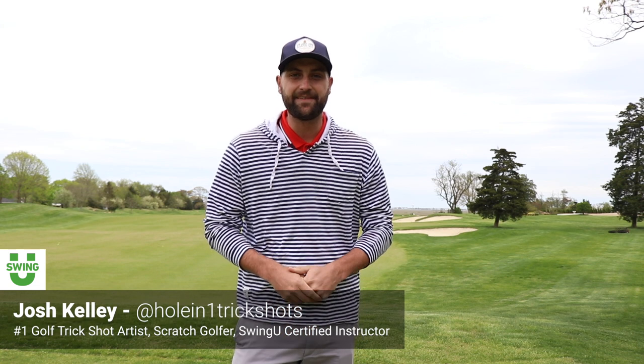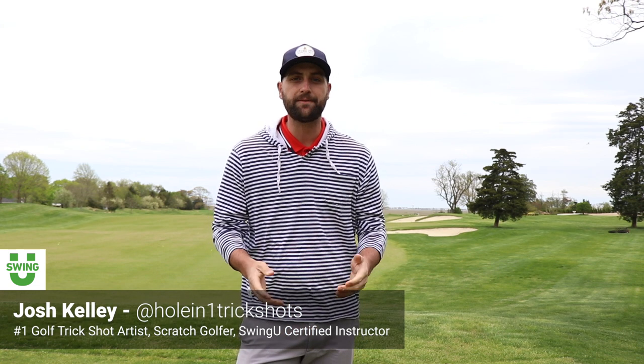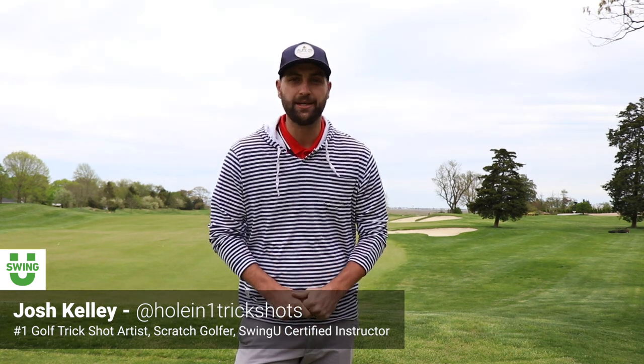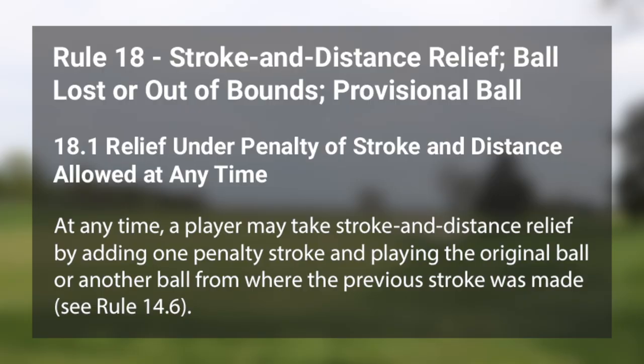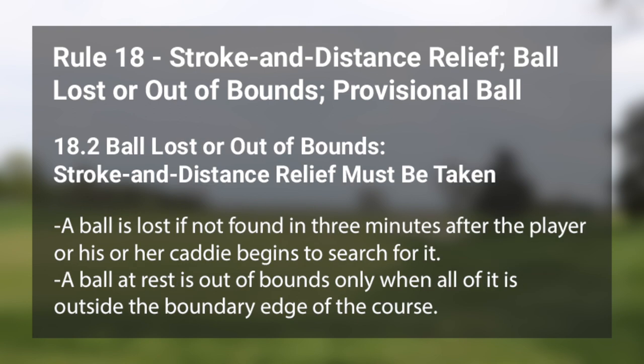Hey guys, Josh Kelly here. In today's video we're going to do a brief overview of USGA Rule 18, which covers stroke and distance relief, ball lost or out of bounds, and provisional ball. Rule 18.1 covers relief under penalty of stroke and distance, allowed at any time. At any time, you're allowed to take stroke and distance relief by adding one penalty stroke and playing your original ball or another ball from where the previous stroke was made.